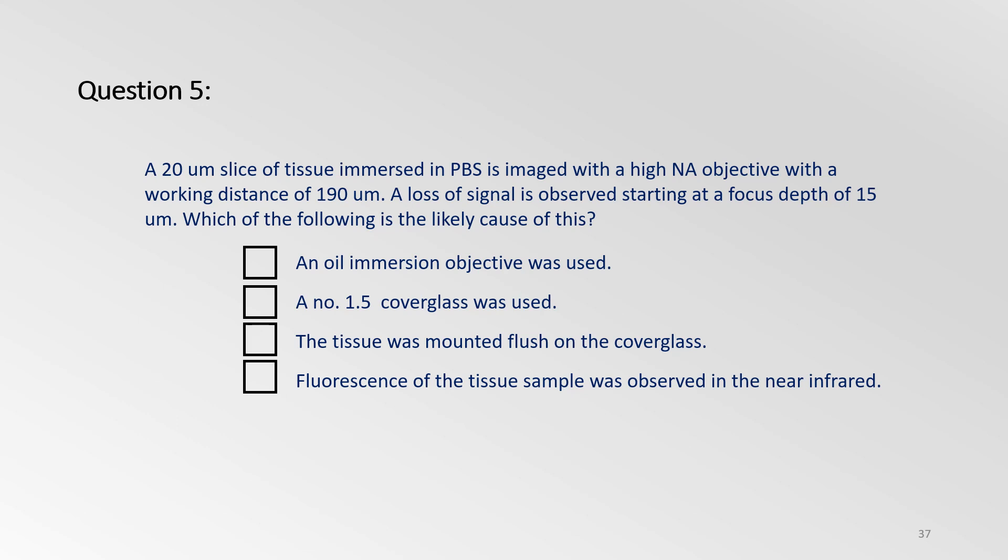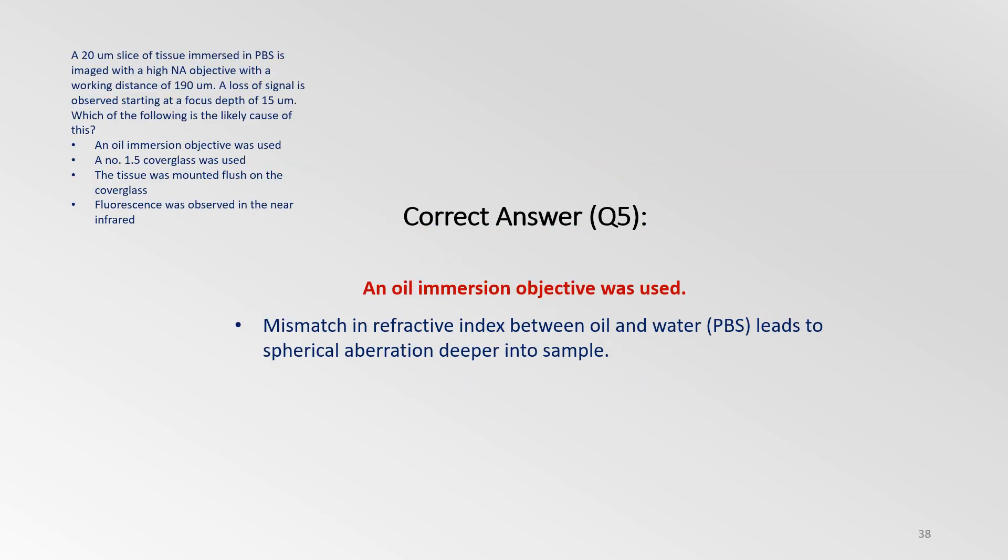Let's try one last question. A 20 micron slice of tissue immersed in PBS is imaged with a high NA objective with a working distance of 190 microns. A loss of signal is observed starting at the focus depth of 15 microns. Which of the following is the likely cause of this? An oil immersion objective was used. A number 1.5 cover glass was used. The tissue was mounted flush on the cover glass. Fluorescence of the tissue sample was observed in the near infrared. The loss of signal observed at a focus depth of 15 microns is mainly due to spherical aberration. And this is because an oil immersion objective was used on a sample containing PBS, which is basically aqueous. This mismatch in refractive index between oil and water leads to spherical aberration deeper into the sample.